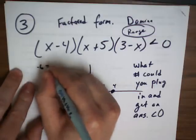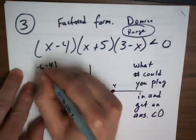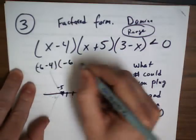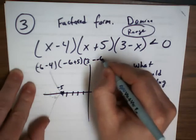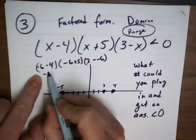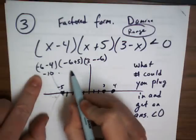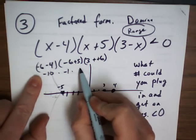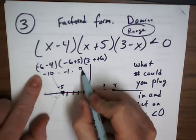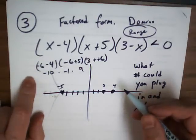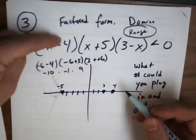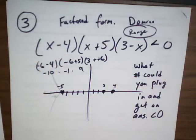So let's plug negative six in. Negative six minus four times negative six plus five times three minus negative six. What are you guys getting? Ninety. Way up here, right? Ninety is way up here. Positive ninety. So that means that the graph comes in from the top.